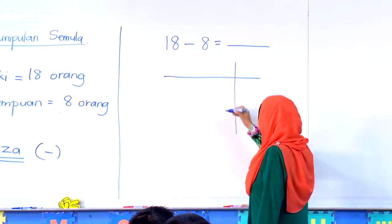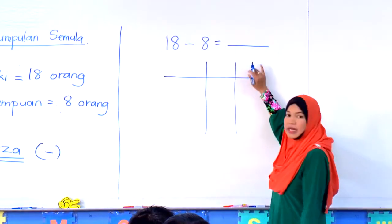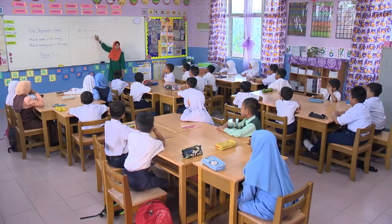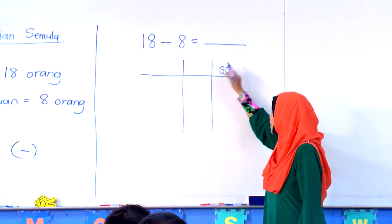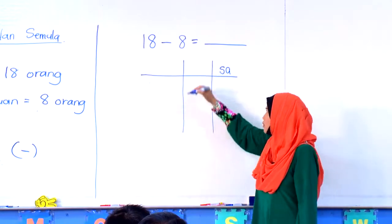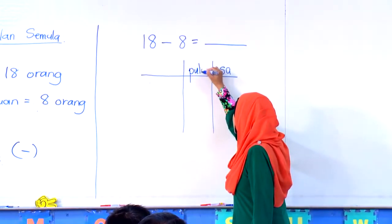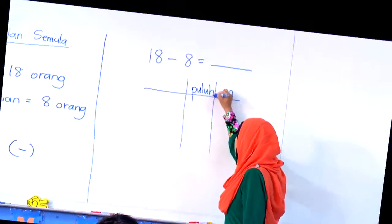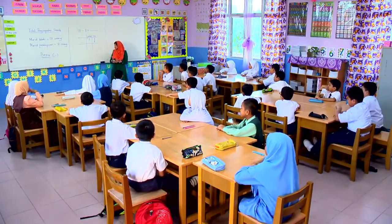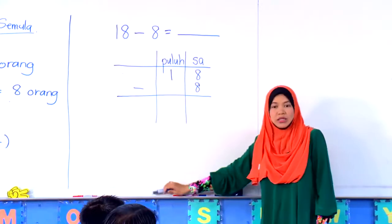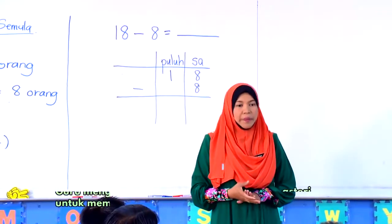Kita bahagikan kepada berapa bahagian. Di sini kita nak letak apa? Sa. Yang ini? Puluh. Kita tuliskan kepada puluh. Daripada sini, kita menggunakan jari kita untuk mendapat jawapan yang lebih tepat.